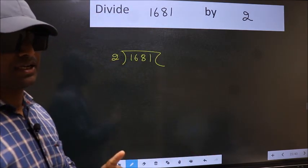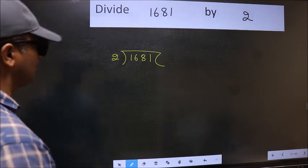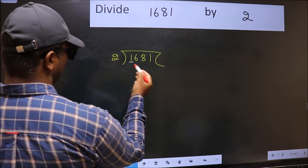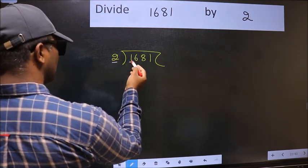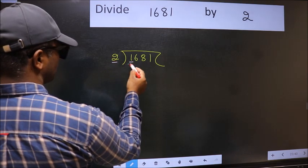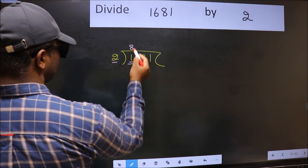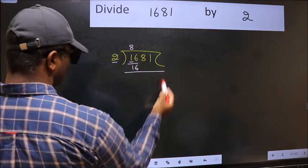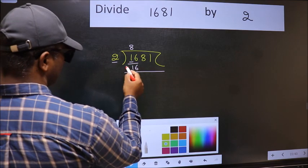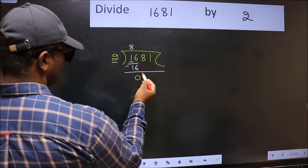This is your step 1. Next, here we have 1 and here 2. 1 is smaller than 2, so take 2 numbers. 16. When do we get 16 in 2 table? 2 times 8 is 16. Now we should subtract, we get 0.